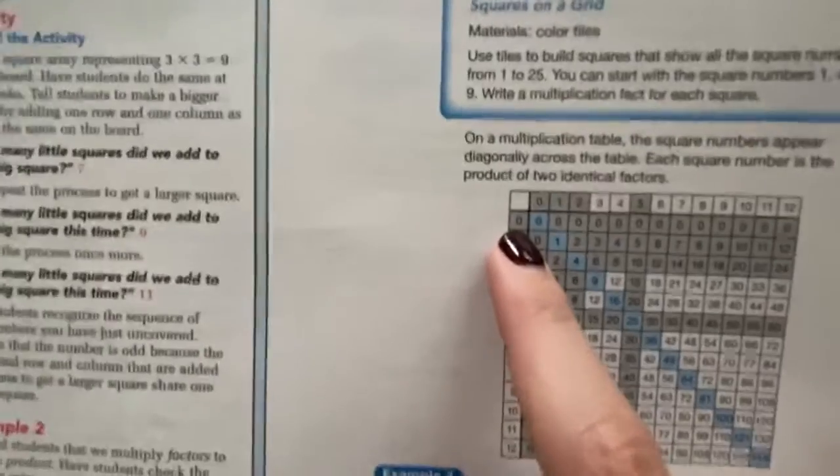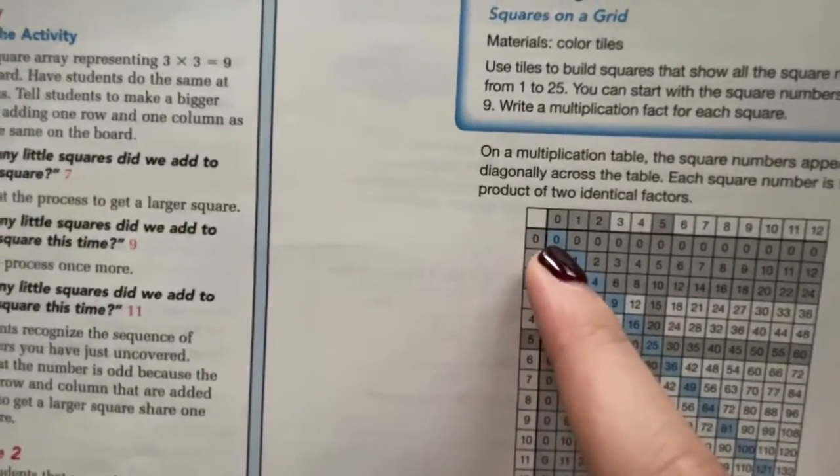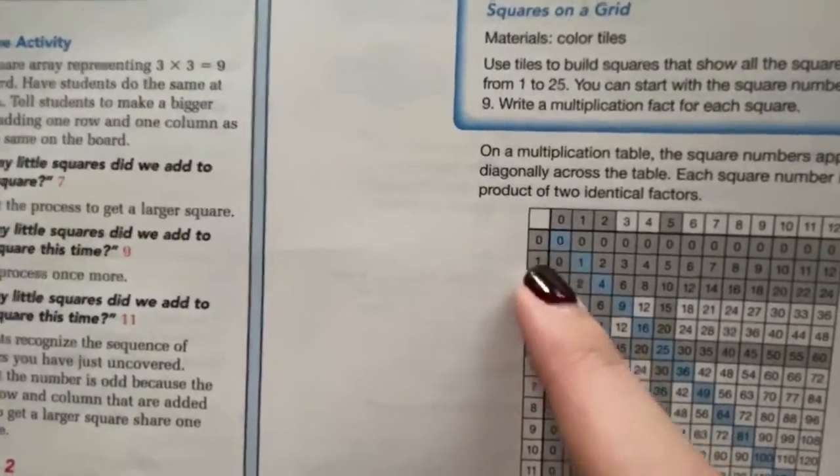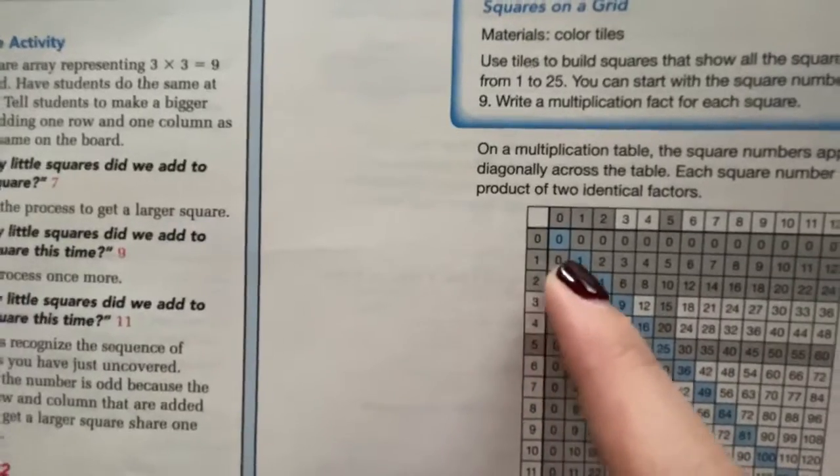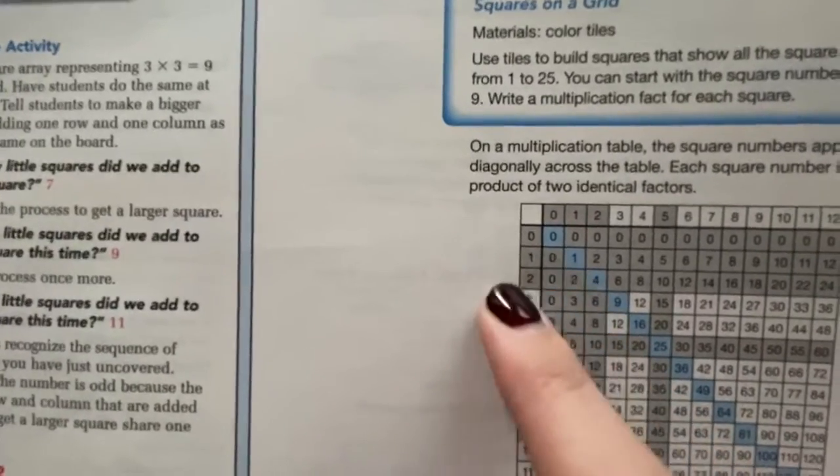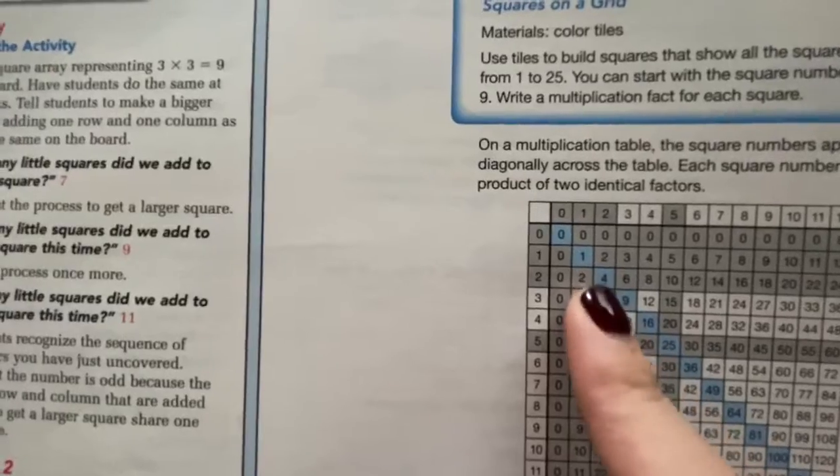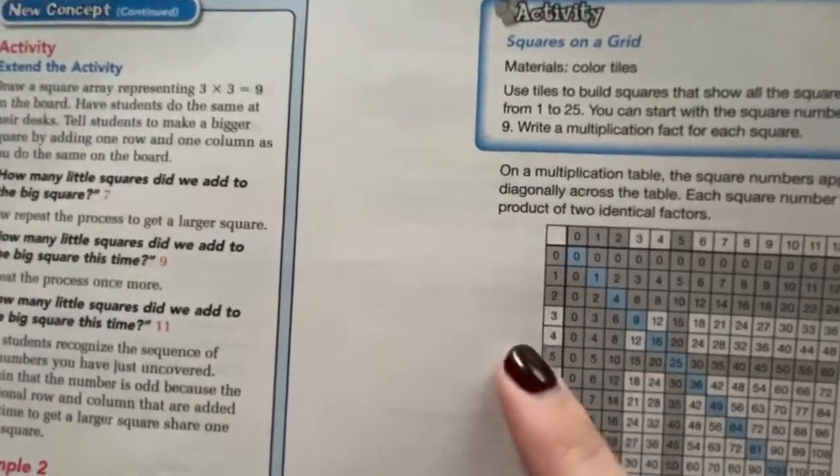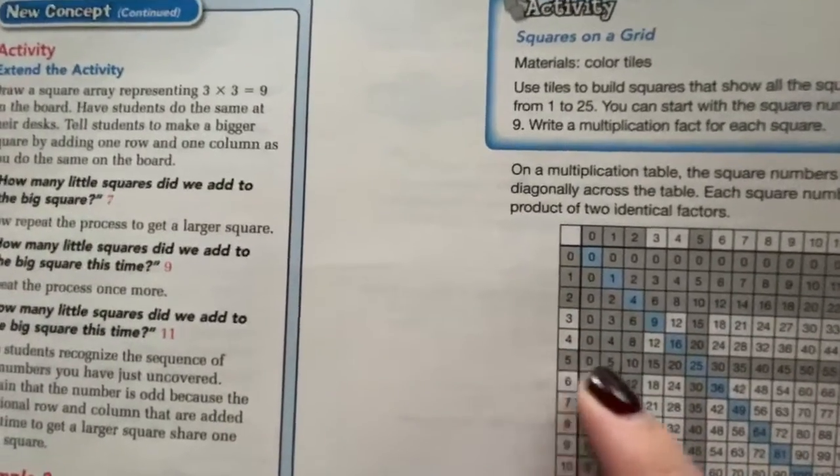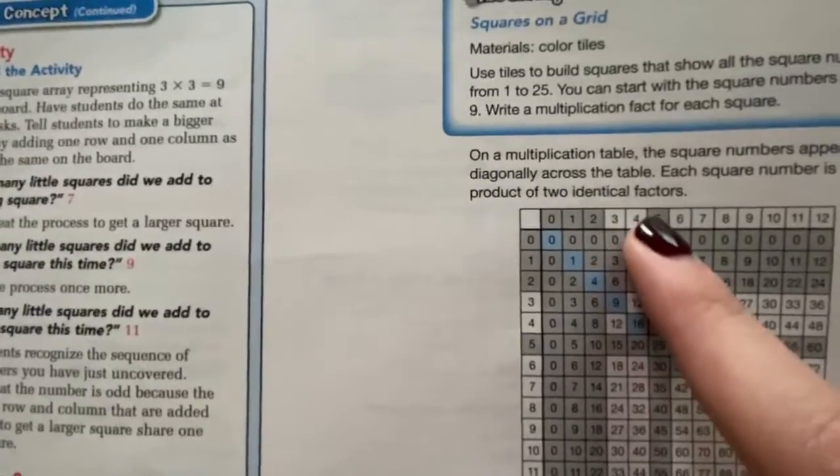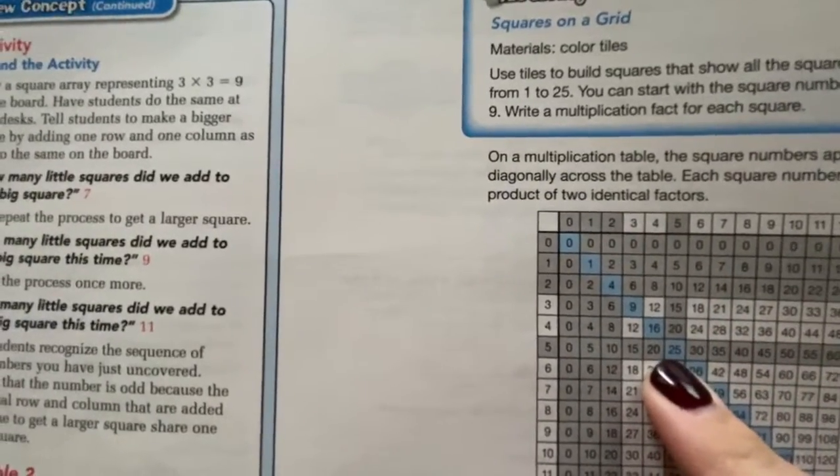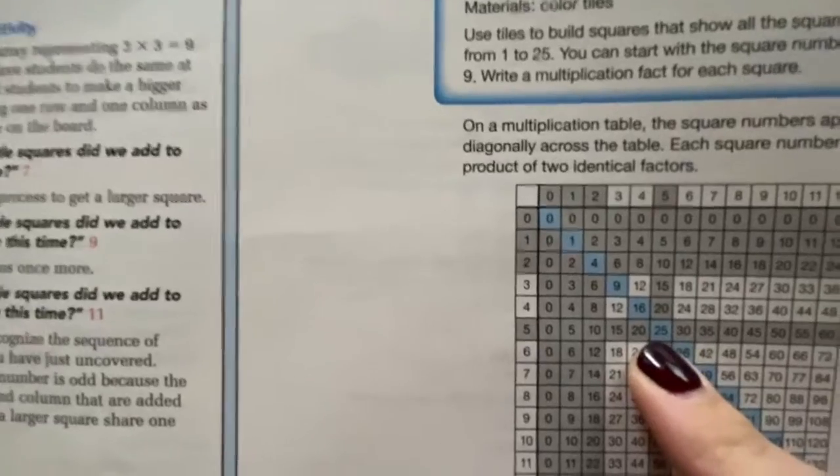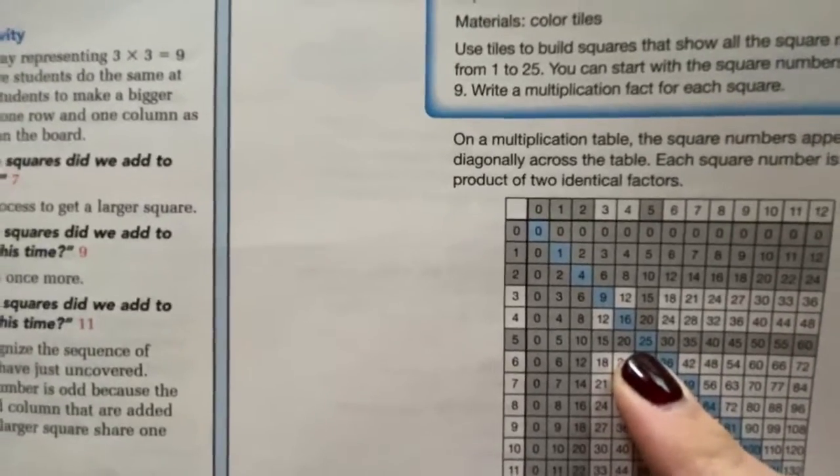If we multiplied 0 times 0, our squared number would be 0. If we multiplied 1 times 1, it would be 1. 2 times 2 is 4. And on and on. And here's what we just did. 5 times 5 gives us 25 as our square number product.